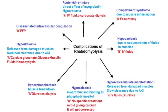Hypocalcemia occurs in many patients with rhabdomyolysis due to the inward influx and binding of calcium. Usually no specific treatment is required as it is a calcium shift, but symptomatic patients may be treated with calcium infusion. Rarely, hypercalcemia can occur in the late phase of the disease, which can be treated with IV fluids and diuretics.